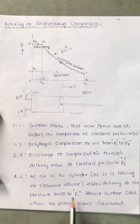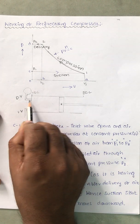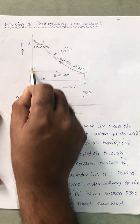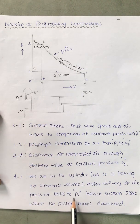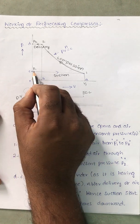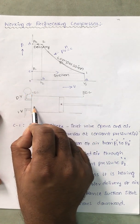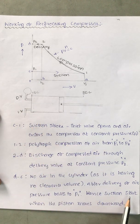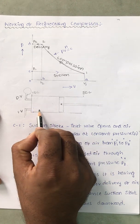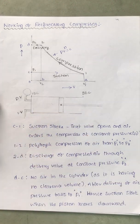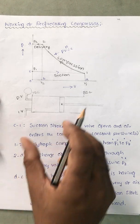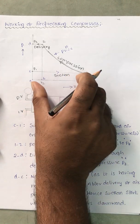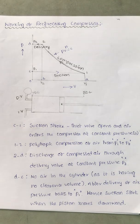After delivery of air, there is no air in the cylinder, so the pressure directly falls from P2 to P1. Hence suction starts. Once the pressure is at P1, the piston starts to move downward, the inlet valve opens, and suction takes place. This is the working and the representation of the reciprocating compressor on the PV plot with no clearance volume. Thank you very much.